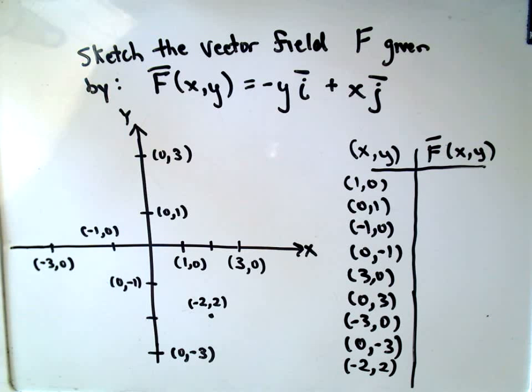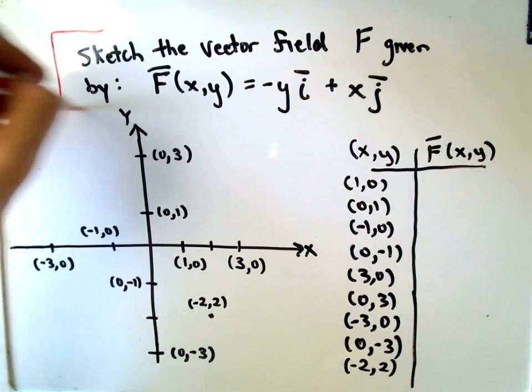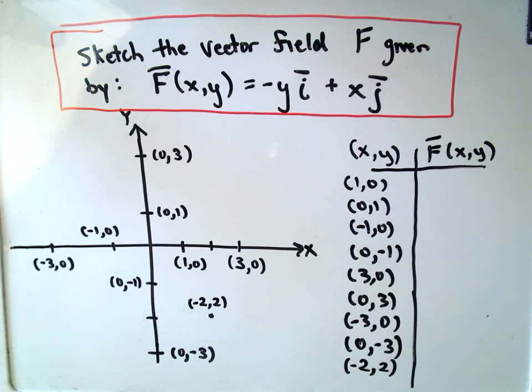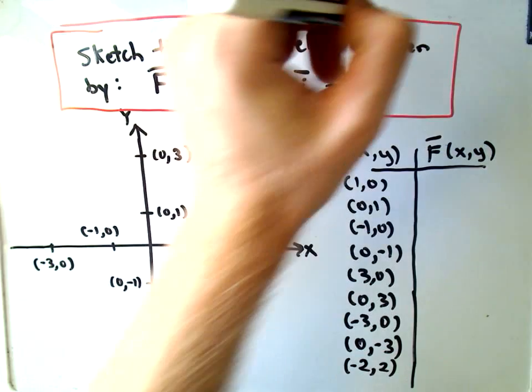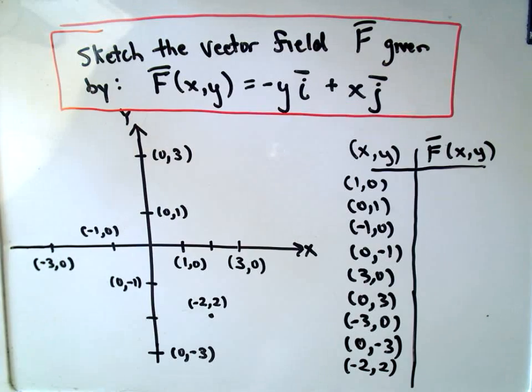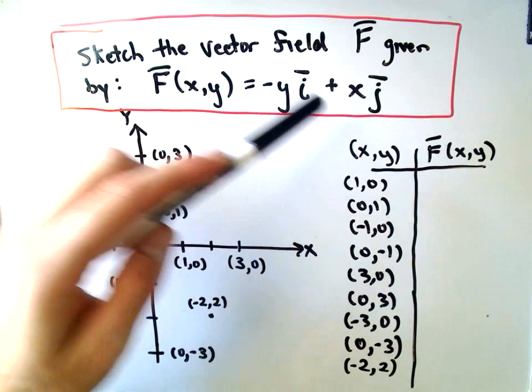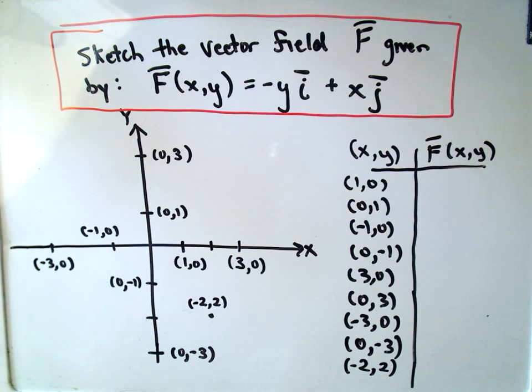Okay, so kind of a basic example here, nothing too complicated. Kind of a typical type of problem that you'll see. So I'm going to sketch the vector field F, given by - I should put a little bar over my F here to emphasize it's a vector function - given by negative yi plus xj will be the formula.